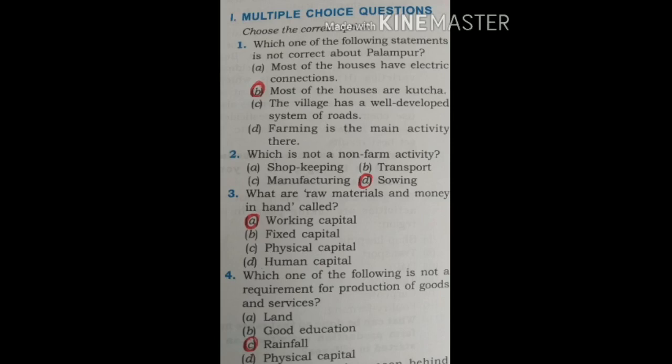Question 3: What are raw materials and money in hand called? We have four options: Working capital, Fixed capital, Physical capital, and Human capital. The correct option is A — Working capital.